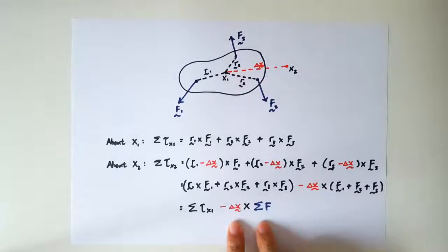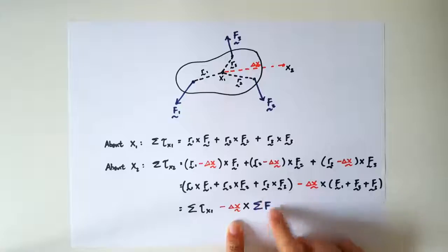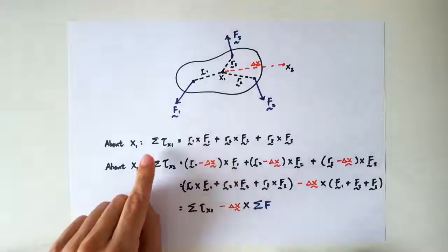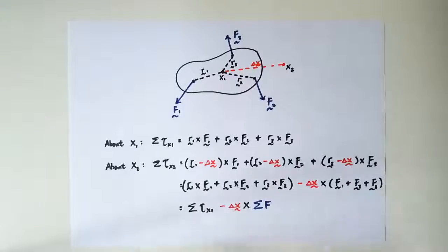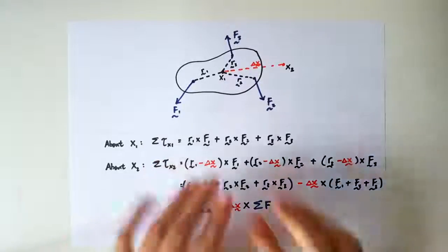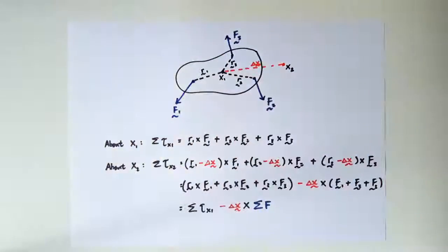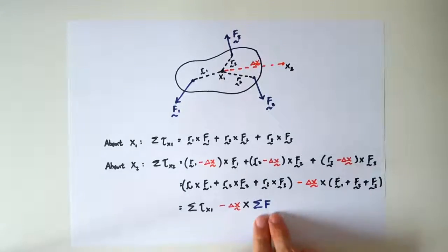This means that if your net force is 0, then this term is also 0, which means the net moment about x1 and x2 are the same. So that's the idea, that the net moment evaluated about any point is the same if and only if net force is 0.